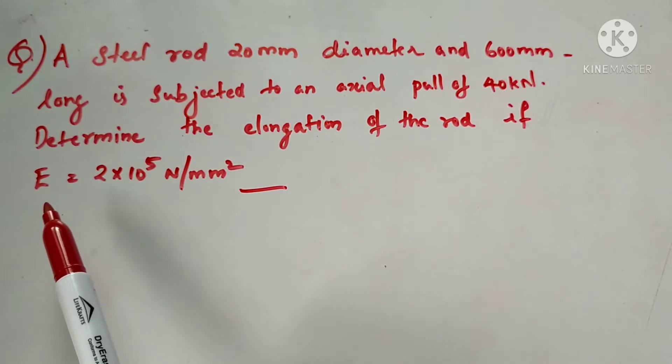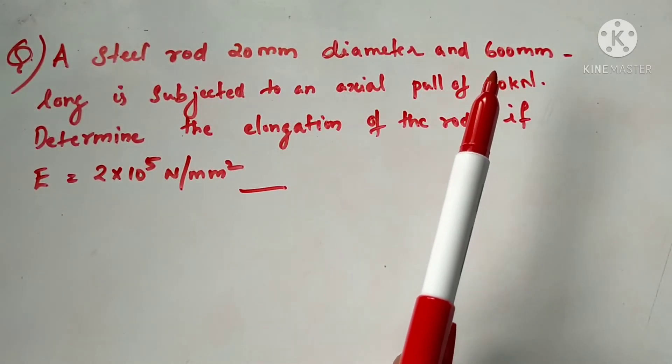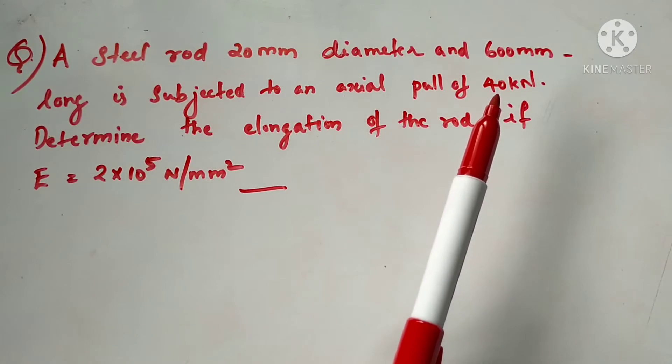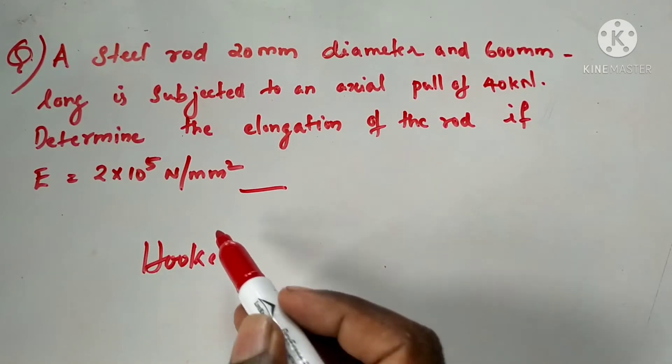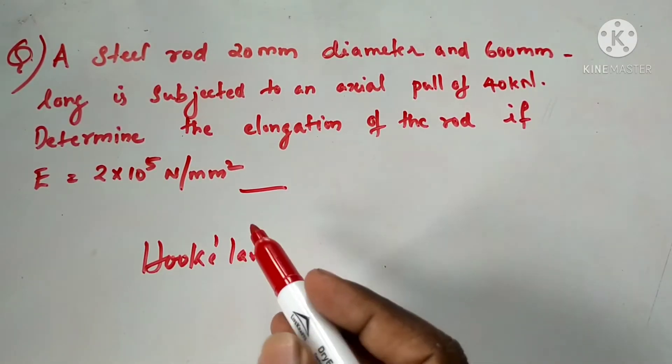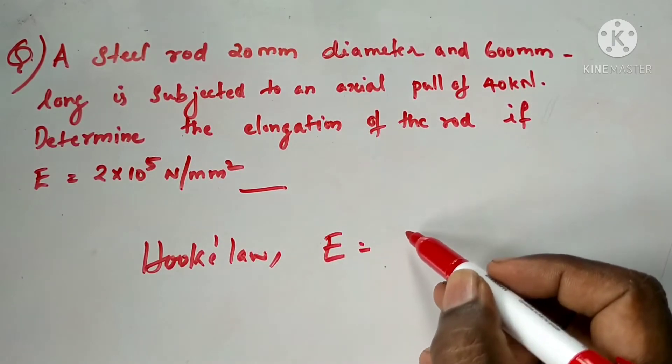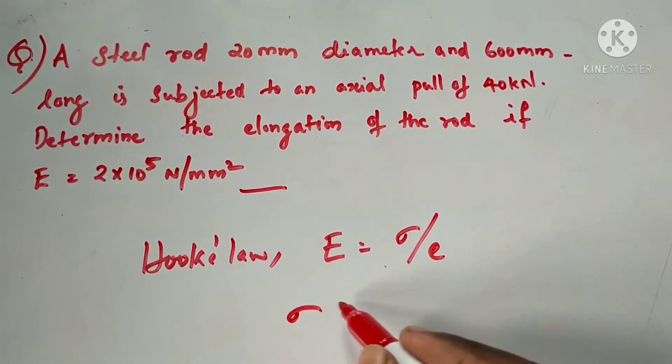The first thing given is the Young's modulus E. The values of the diameter and the length of the rod are also given, along with the load P. Hooke's Law states that Young's modulus E is equal to stress by strain. Sigma is the stress. Stress is P by A.